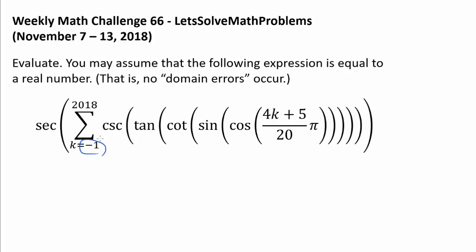To begin with, let's realize that we don't have to go all the way from negative 1 to 2018, because cosine is a periodic function - it repeats in the cycle of 2π. But in this case, we do not have cosine of x, or cosine of k rather, we have cosine of (4k+5)/20 π. So what's the period in this case?